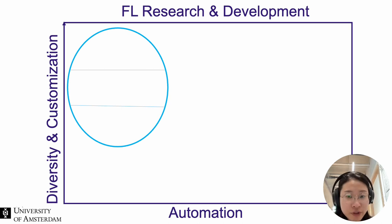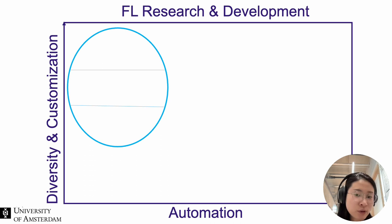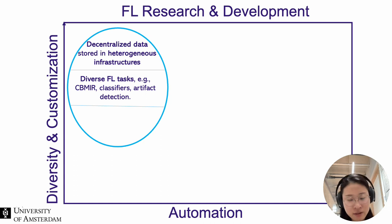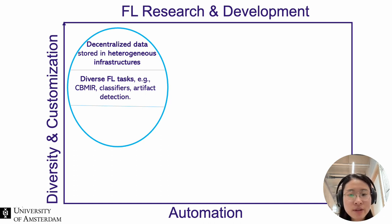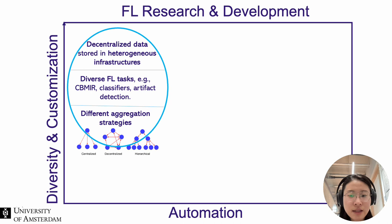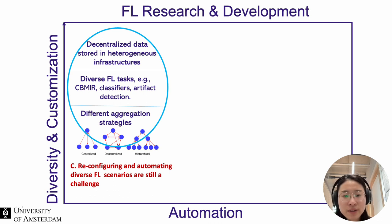In federated learning research and development, we usually have to consider its diversity and customization, whatever kind of federated learning research you are conducting in the ecosystem. For example, with decentralized data stored in heterogeneous infrastructures, researchers might train diverse federated learning tasks such as content-based medical image retrieval, classifiers, and artifact detection with decentralized data. Moreover, federated learning has diverse aggregation strategies that perform as different topologies — not only centralized, but also decentralized or hierarchical federated learning topologies. We observed that reconfiguring and automating such diverse federated learning scenarios are still challenging.